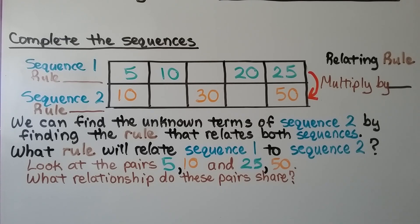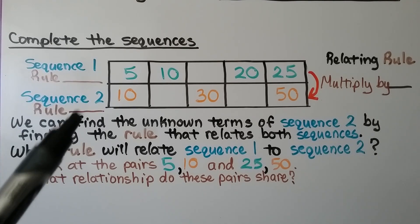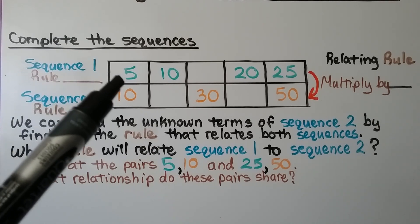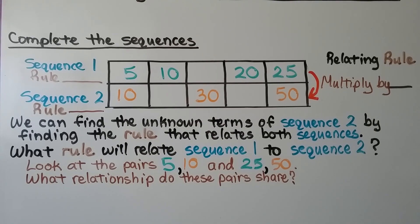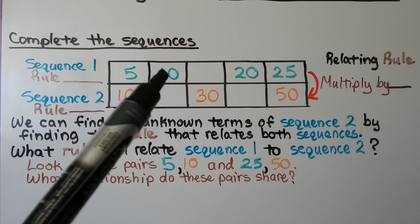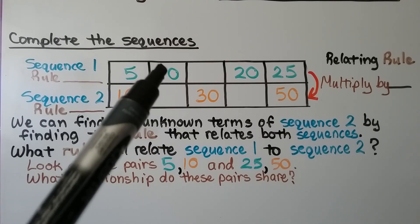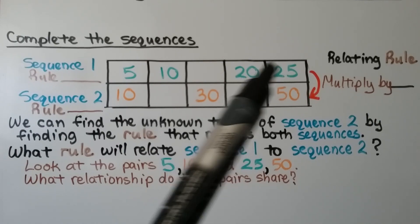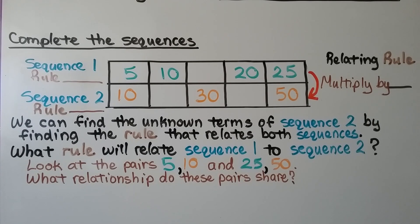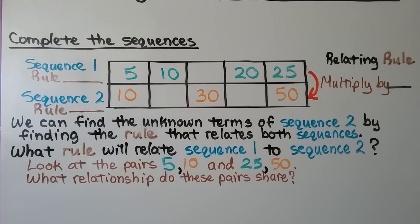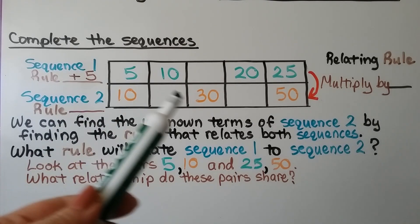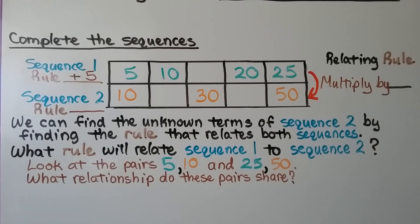We need to complete the sequences here. We have sequence 1 and sequence 2, and we need to find the rule for each sequence. For sequence 1, it goes from 5 to 10, then there's a missing term, then it goes from 20 to 25. To go from 5 to 10, we could add 5 or multiply by 2. But to go from 20 to 25, we need to add 5 — so multiply by 2 is not the rule, as that would give 40. The rule must be add 5, and the missing term must be 10 plus 5, which is 15.